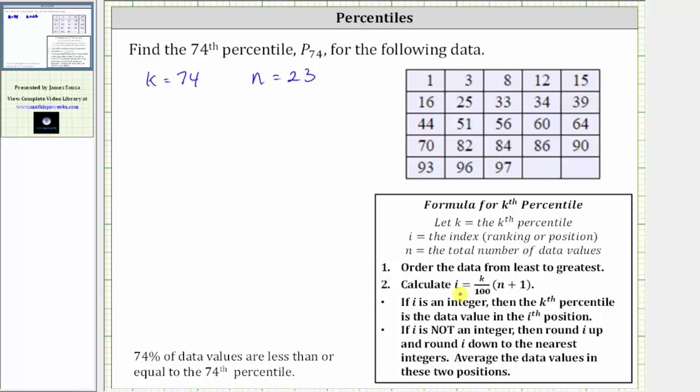Step two, we calculate i, which is equal to k divided by 100 times the quantity n plus one. So i is equal to k divided by 100, which is 74 divided by 100, and then times the quantity n plus one, which in our case gives us the quantity 23 plus one.